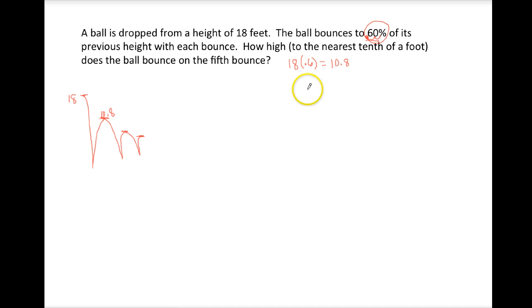How high would it be on the next bounce? We would take that number 10.8 and do 60% of that height. So if we take times .6 we get 6.48 so we know this next bounce is 6.48 feet high.